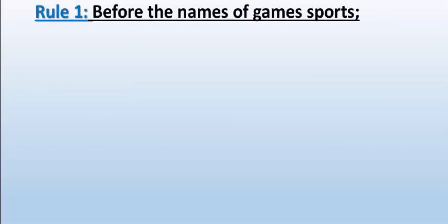Article is not used before the names of games or sports. For example, 'I am playing chess.' Before any game name, article is not used. We cannot say 'I am playing the chess,' 'I am playing the cricket,' or 'I am playing the basketball.' That is wrong. Do not use article before the name of games.